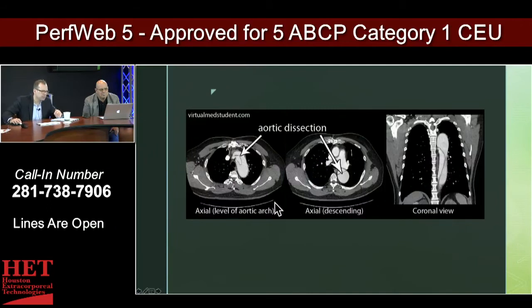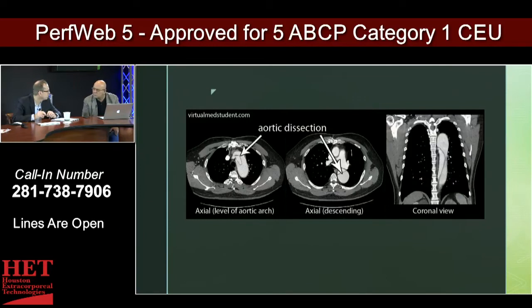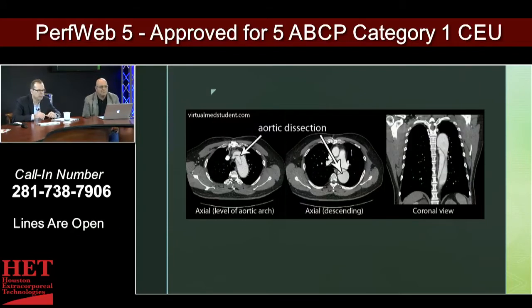Sometimes the extent of where you need to open up the aorta — whether you're doing a simple ascending replacement, a hemi arch, re-implanting the head vessels, or needing retrograde cerebral perfusion — all those nuances come into play when dealing with a dissection like this where you may have to go circulatory arrest.